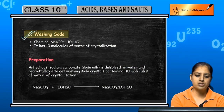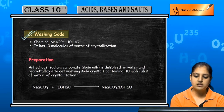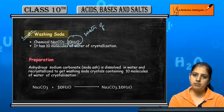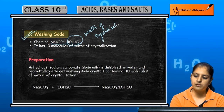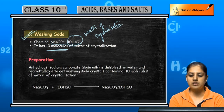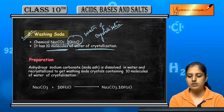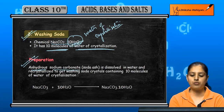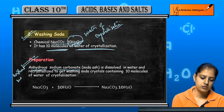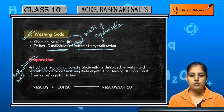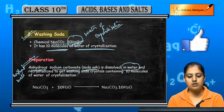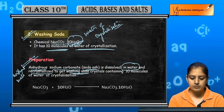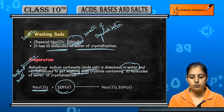Another compound made from sodium chloride is washing soda. Its chemical formula is Na2CO3·10H2O, where the 10H2O represents water of crystallization — it has 10 molecules of water of crystallization. It is prepared by dissolving anhydrous sodium carbonate, called soda ash, in water and then recrystallizing it.